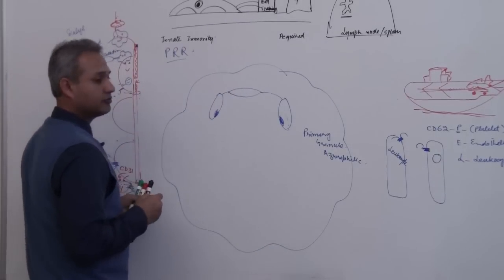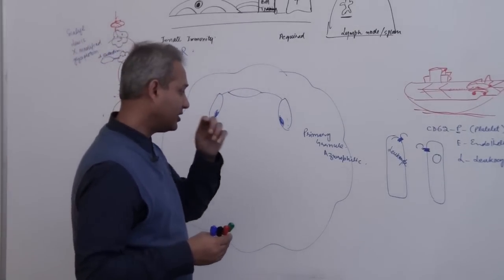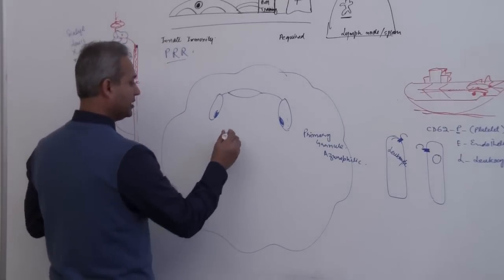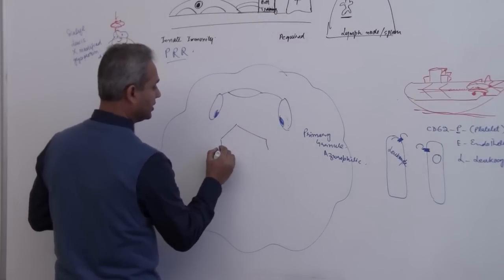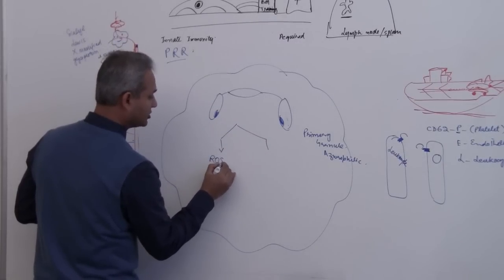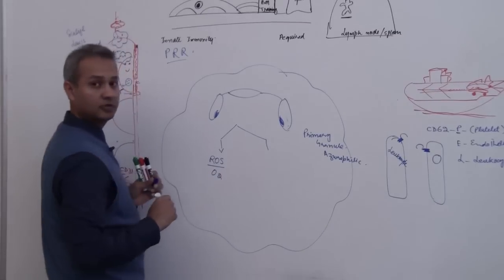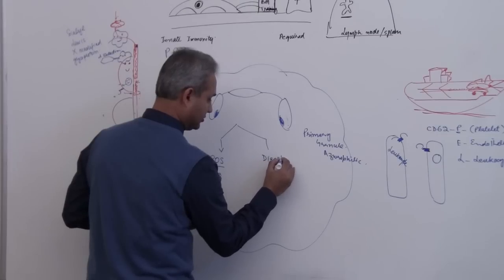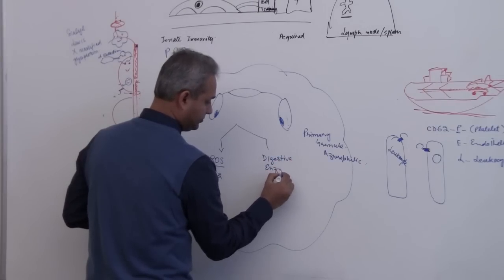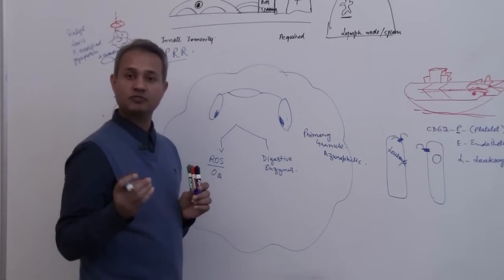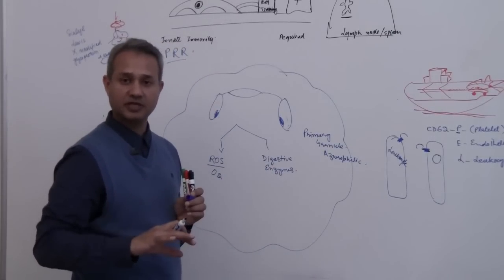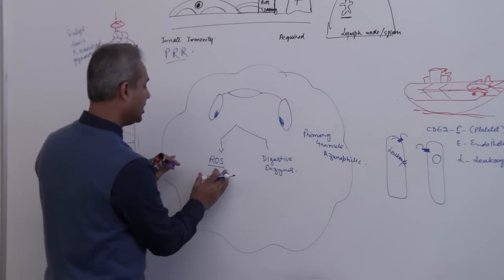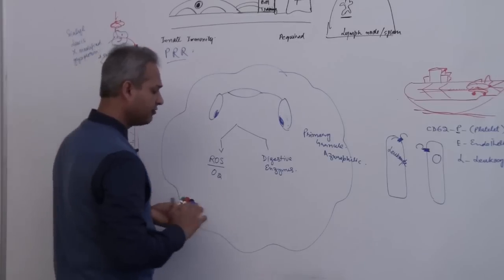First of all neutrophil has a very important thing in the primary granules which is called myeloperoxidase. Neutrophil can kill the bacteria by two pathways. One pathway is with the reactive oxygen species using oxygen. And the other pathway is without oxygen by directly using digestive enzymes. So there are two mechanisms through which neutrophil can kill the bacteria. One is oxygen dependent and the other one is oxygen independent.